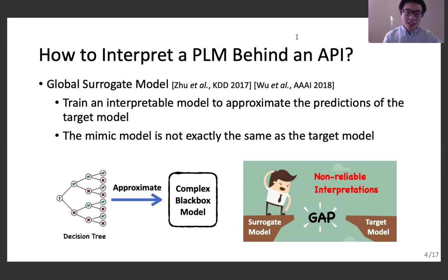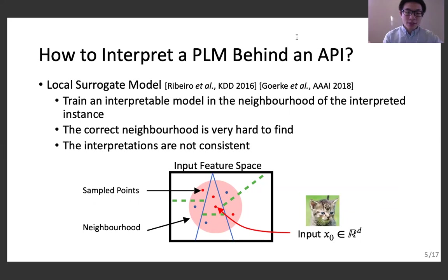However, since there is always a gap between the behaviors of the mimic model and the actual behaviors of the target model, the interpretations we get are not exact. The second method is the local interpretation method. It focuses on interpreting the classification result of one input instance by training an interpretable model in the local neighborhood of that instance.